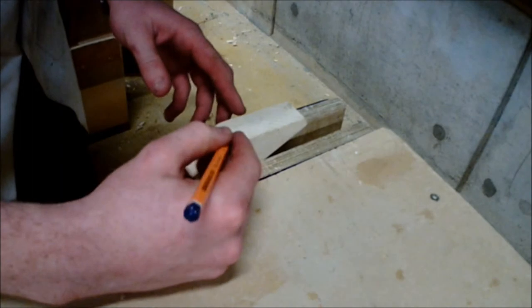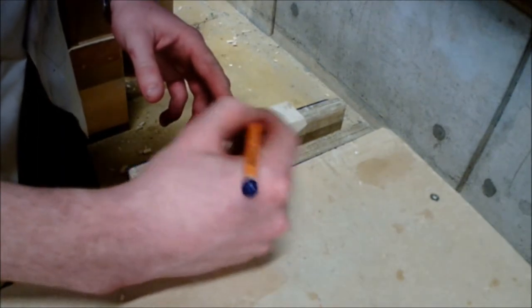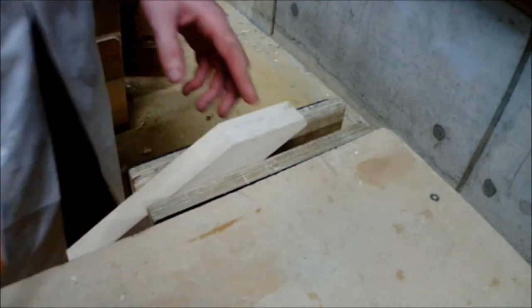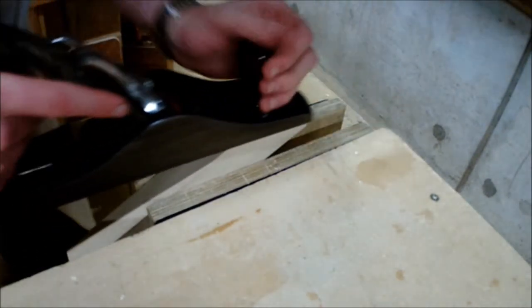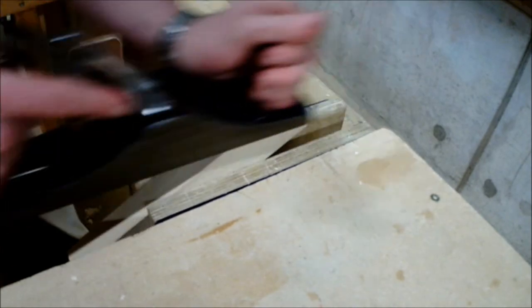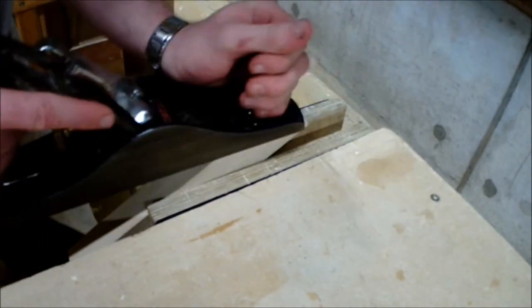When we begin to plane with the grain, it is pressing the fibers down into the wood and removing the material we want to remove. This is why it is important to plane with the grain all the time, as you are compressing the fibers down into the wood.